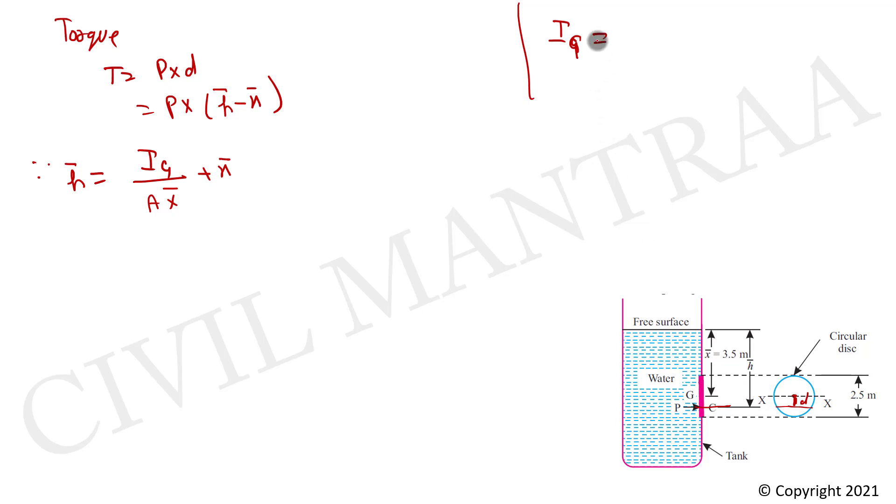For a circular disk, Ig equals pi by 64 times d to the power 4. We put pi by 64 multiply by diameter 2.5 to the power 4, then Ig is about the centroid, that is 1.917 meter to the power 4.